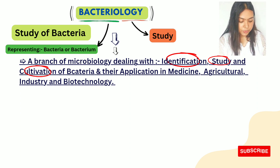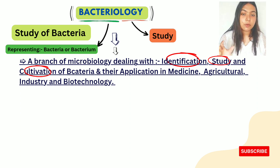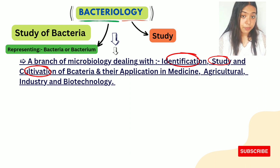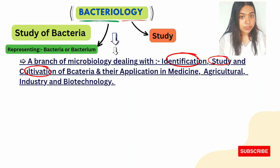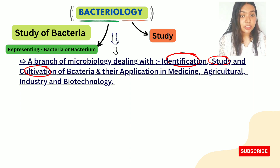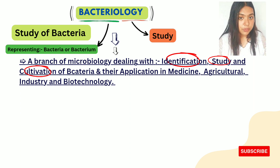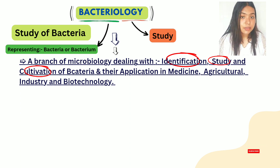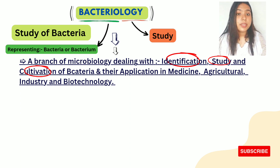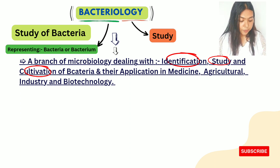When we get an unknown bacteria, we first try to cultivate it — we culture it so the numbers grow — so that we can identify it. Based on their morphological characteristics we can identify which bacteria it is, by performing various staining techniques like gram staining and several other cultivation and culture methods.